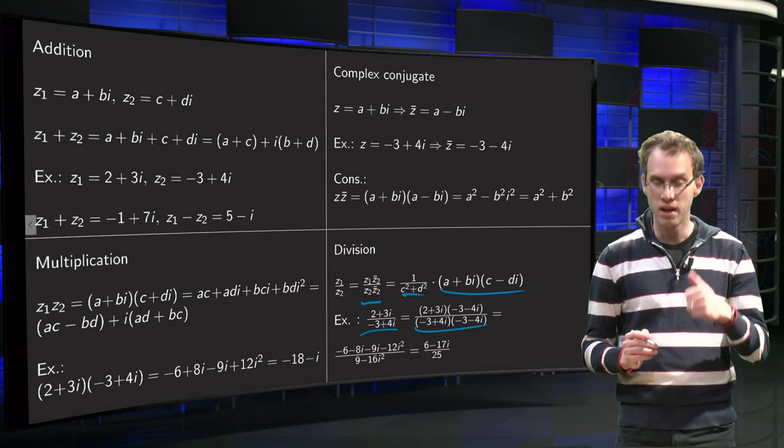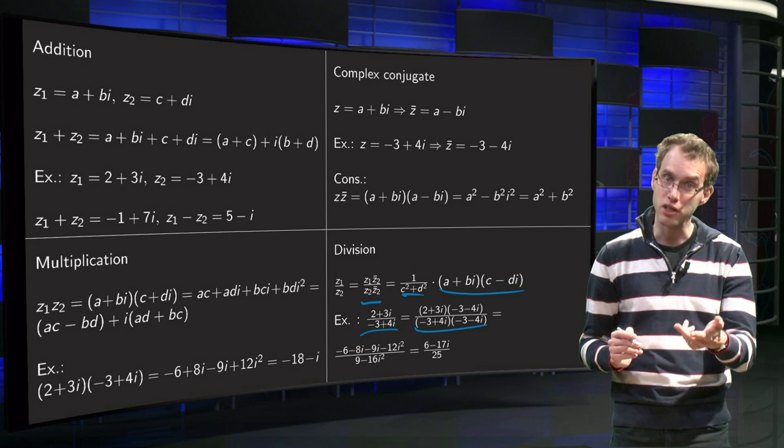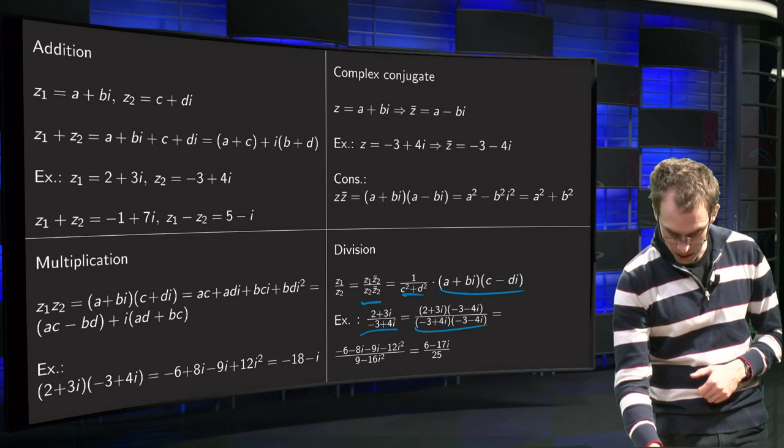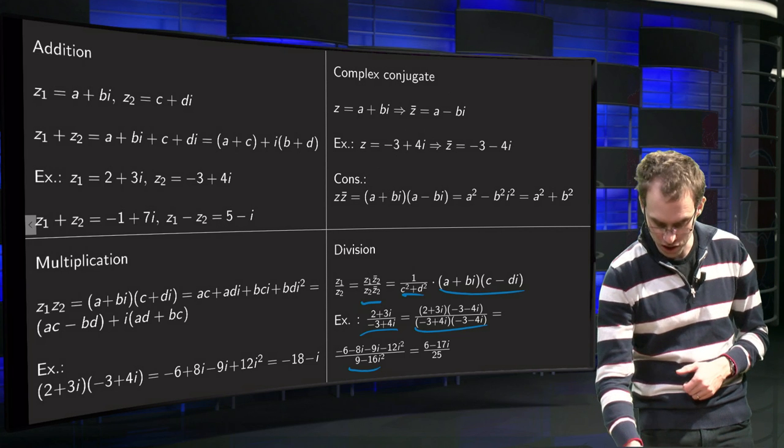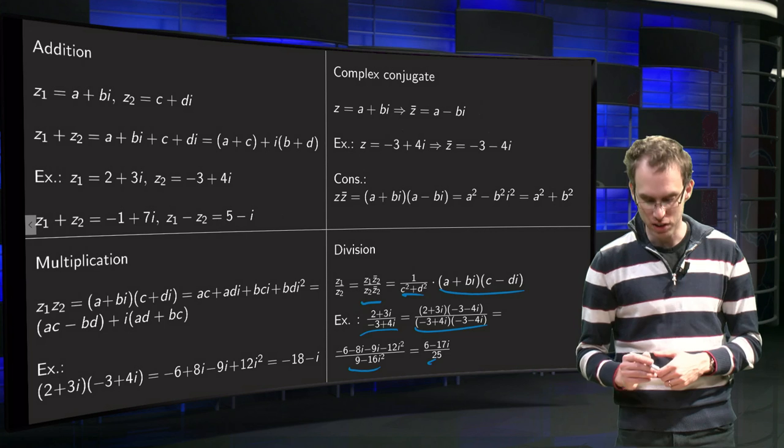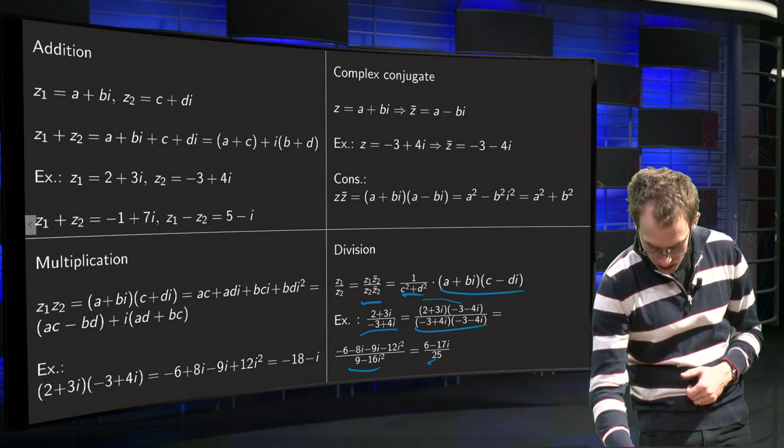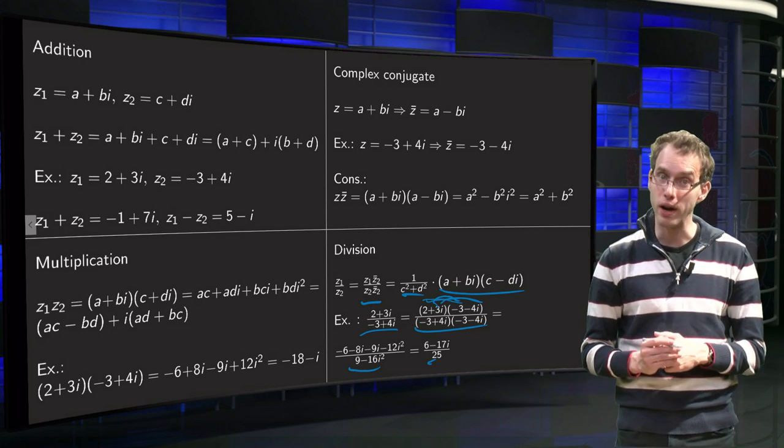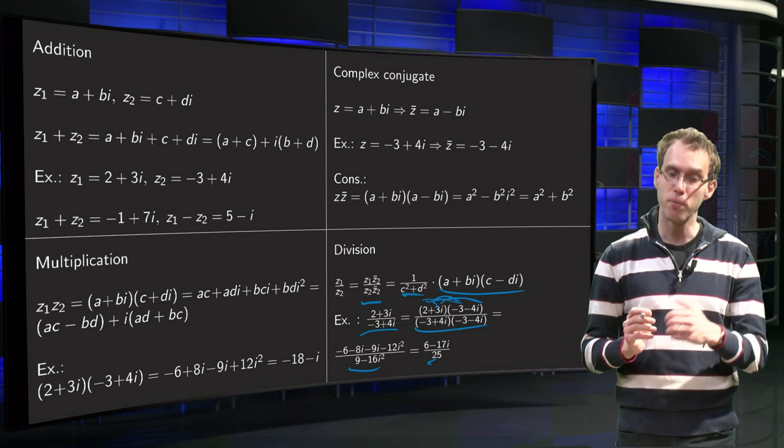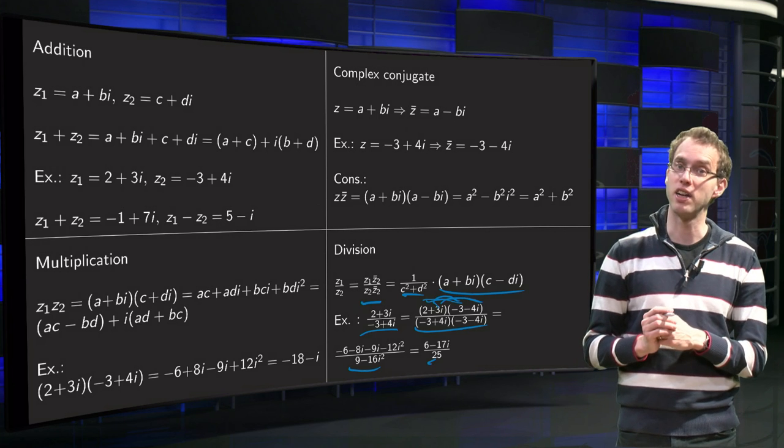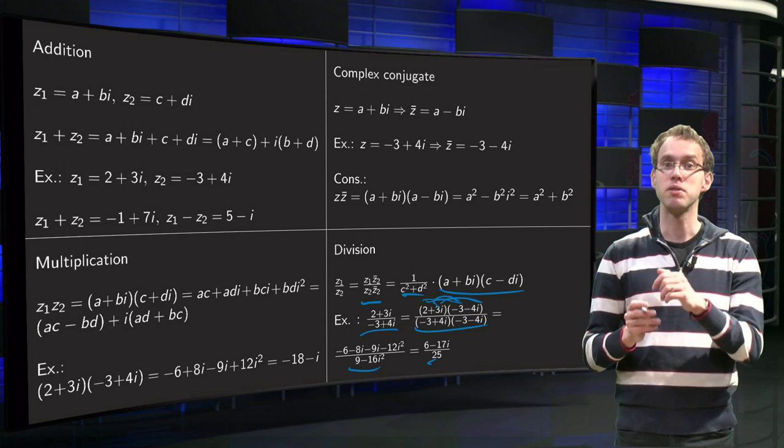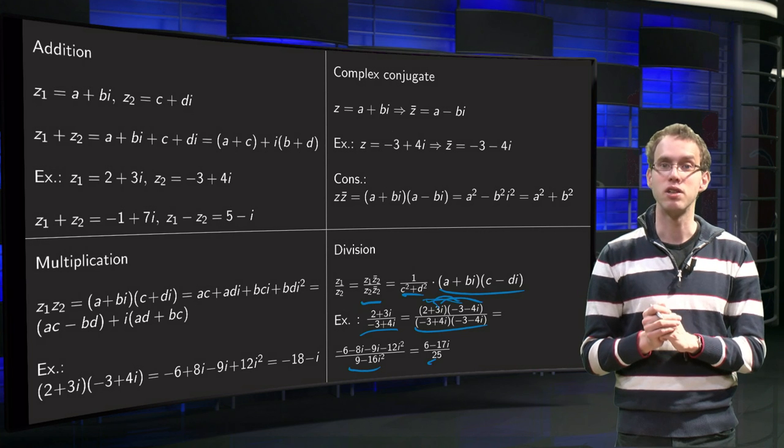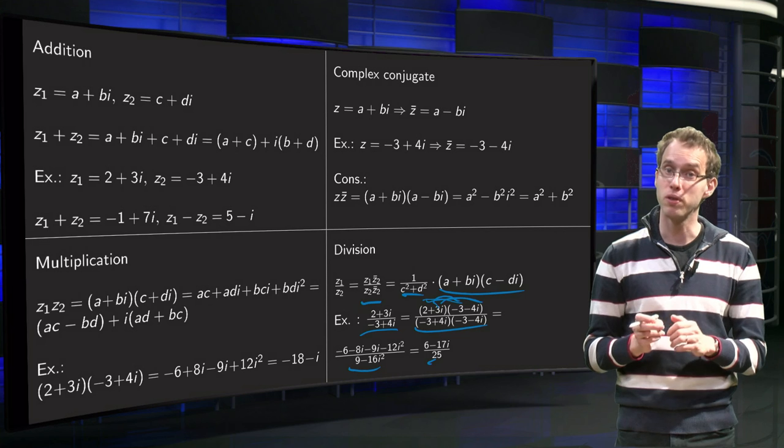Then in the denominator we get 9 - 12i + 12i, which cancel out, minus 16i². So this will give us 9 + 16 = 25. And the numerator is just worked out in the usual way: -6, -8i, -9i, -12i². i² equals -1, so that will be +12. 12 - 6 = 6, and -8i - 9i = -17i. And now we have our complex number, (6 - 17i)/25. So that is how you divide two complex numbers. So now you can do all the standard algebraic operations with complex numbers as well.